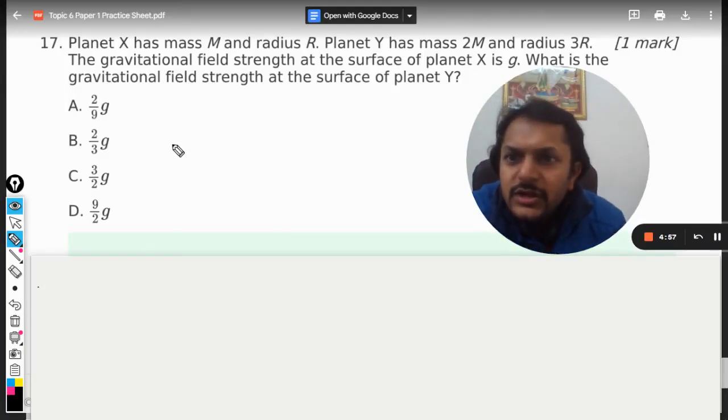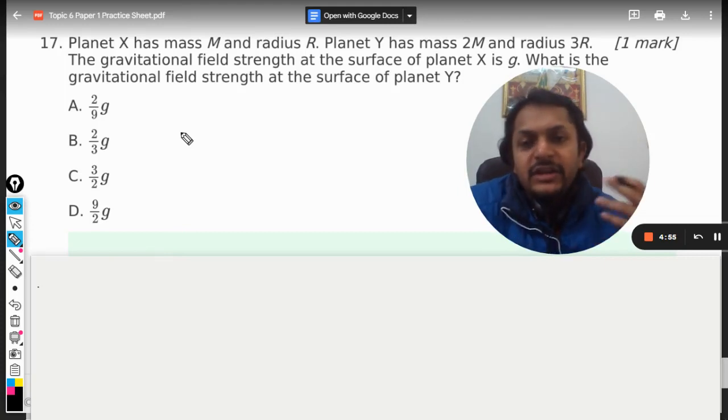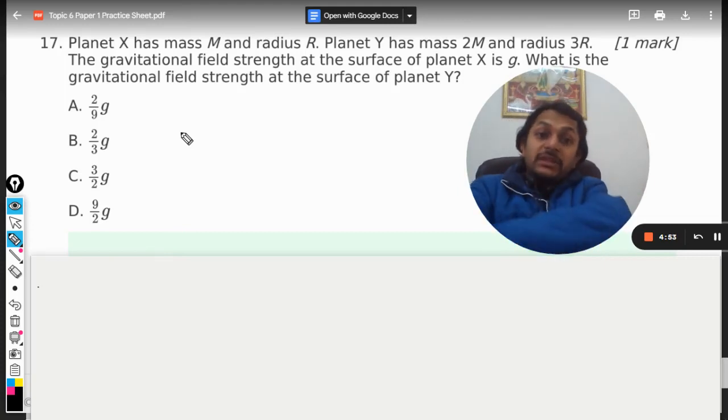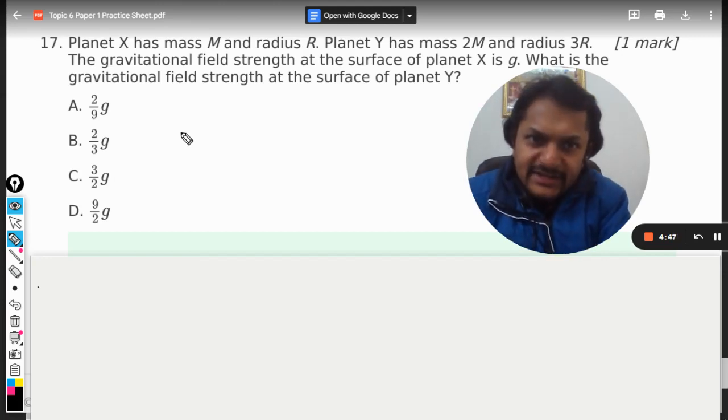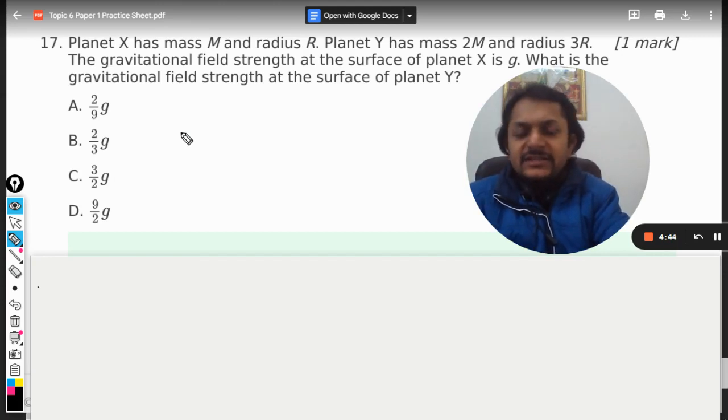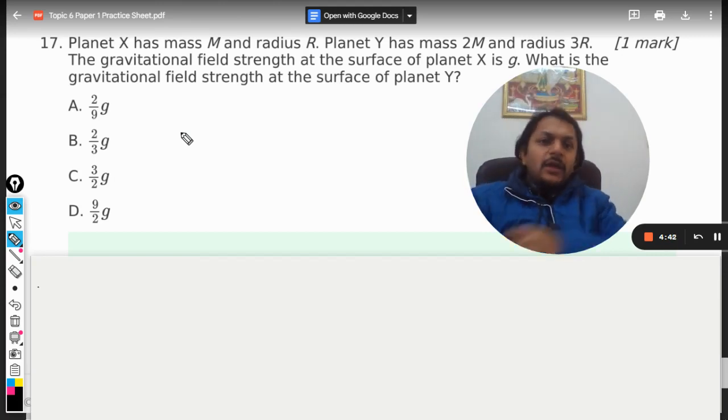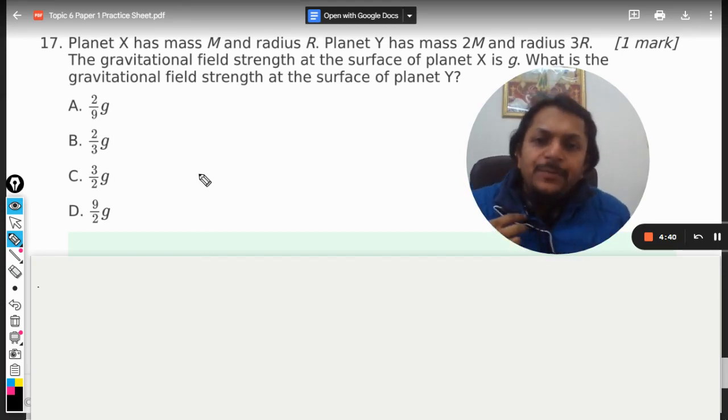Okay dear students, let us do this question. Planet X has mass M and radius R. Planet Y has double the mass and the radius is 3R. The gravitational field strength at the surface of planet X is g. What is the gravitational field strength at the surface of planet Y?